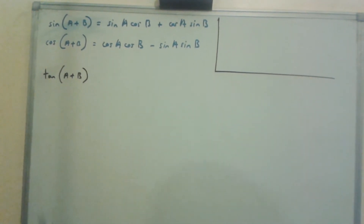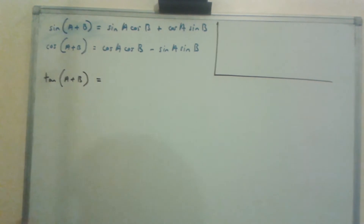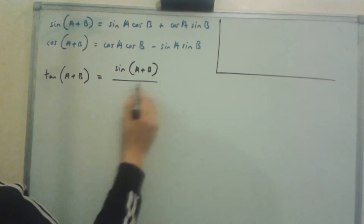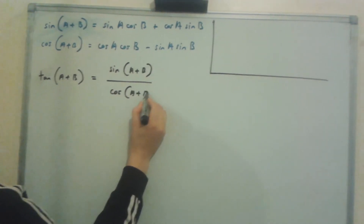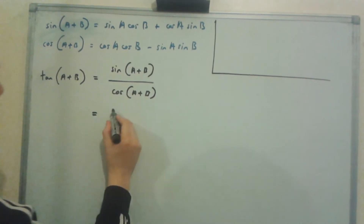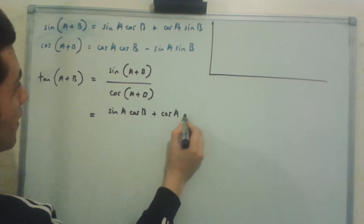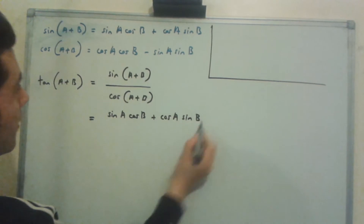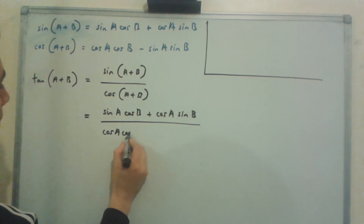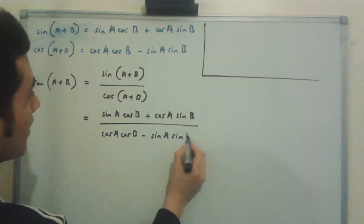Knowing this, let's begin deriving the value of tan(a + b). This is going to be equal to sin(a + b) over cos(a + b), and this is going to be equal to sin a·cos b plus cos a·sin b over cos a·cos b minus sin a·sin b.